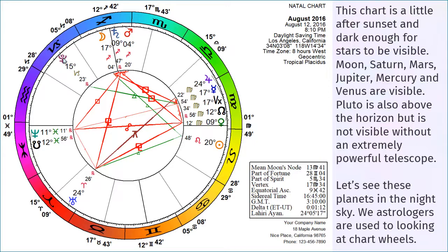This chart is from a little after sunset, dark enough for stars to be visible. Moon, Saturn, Mars, Jupiter, Mercury, and Venus are visible — a lot of visible planets, which is why we're using this particular date. Pluto is also above the horizon, but it's not visible without an extremely powerful telescope.